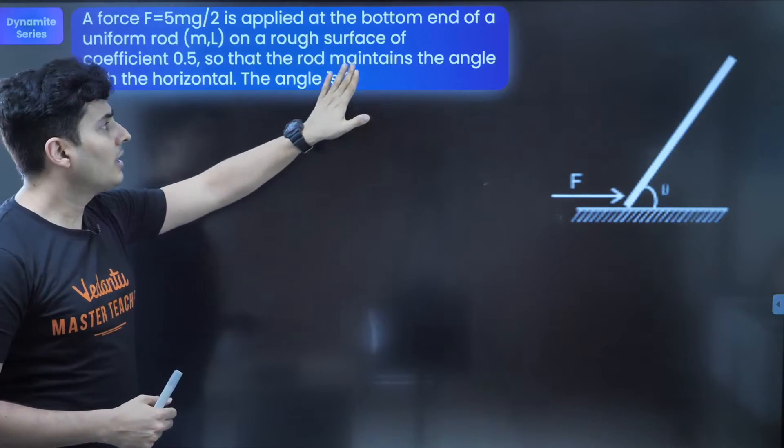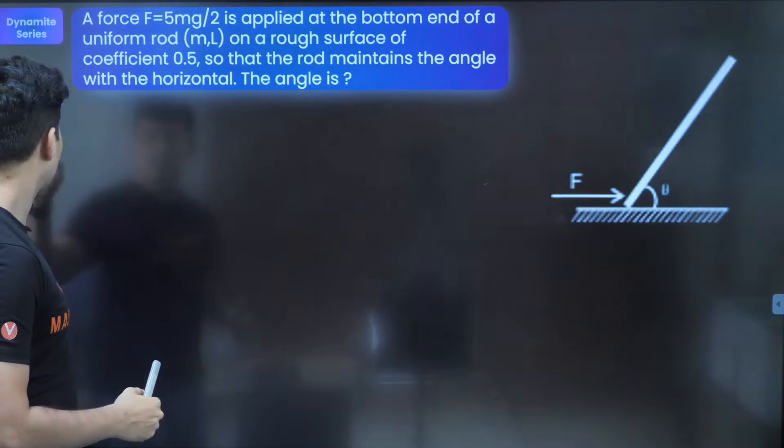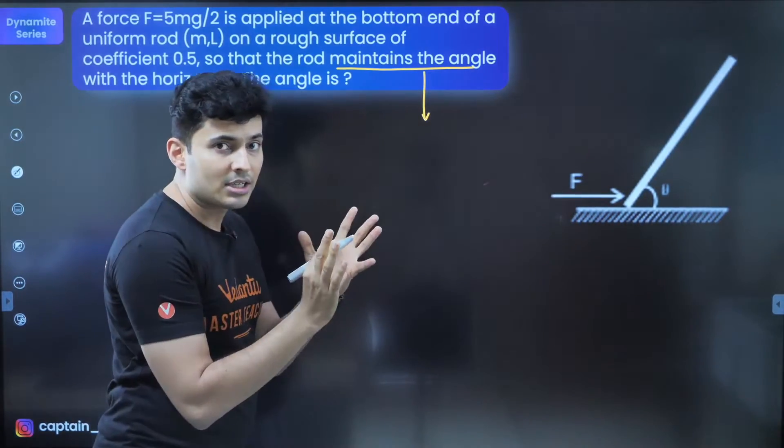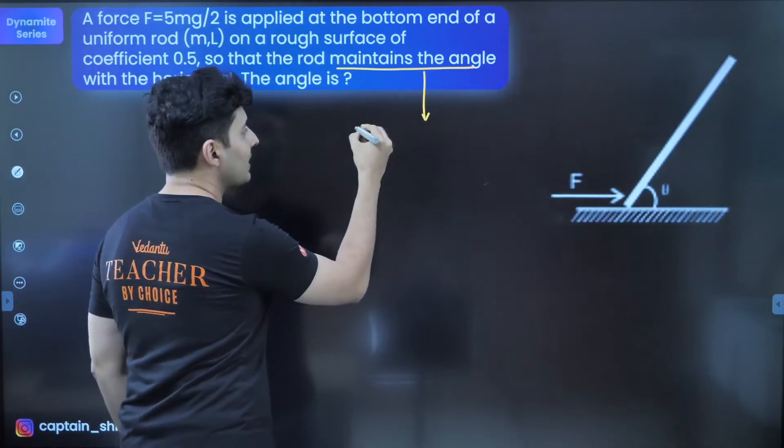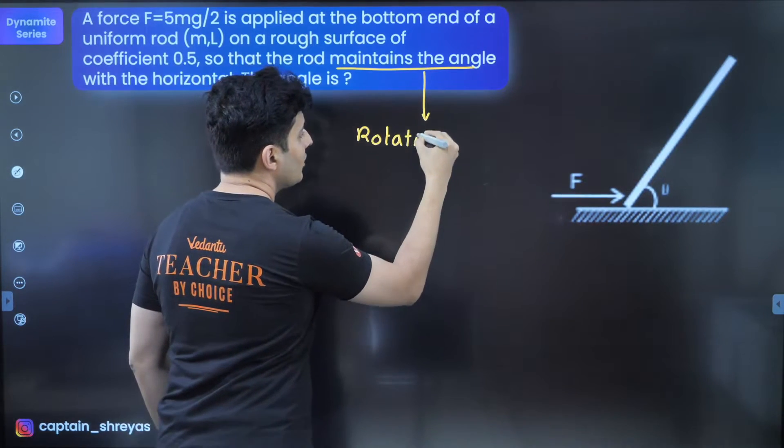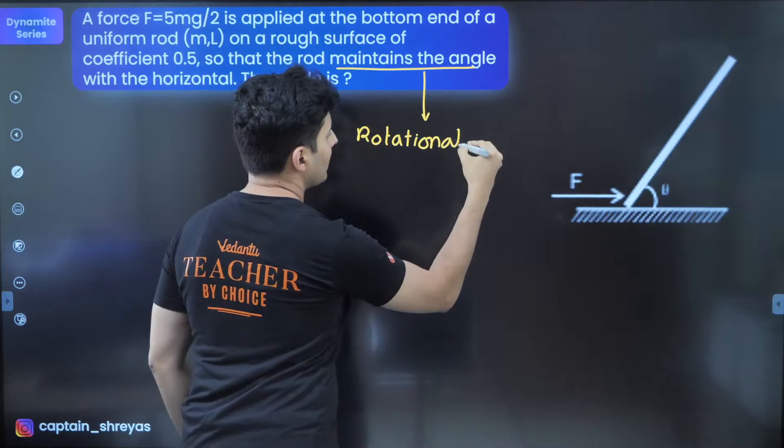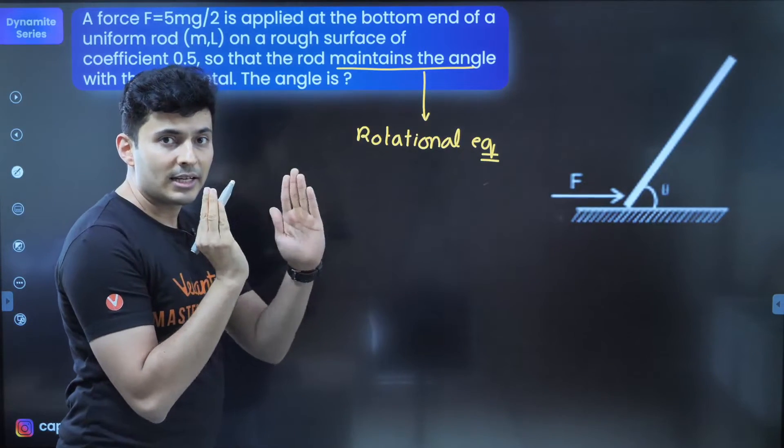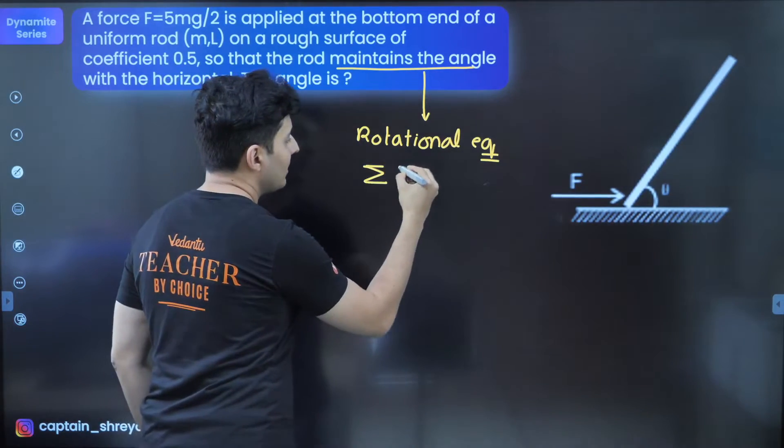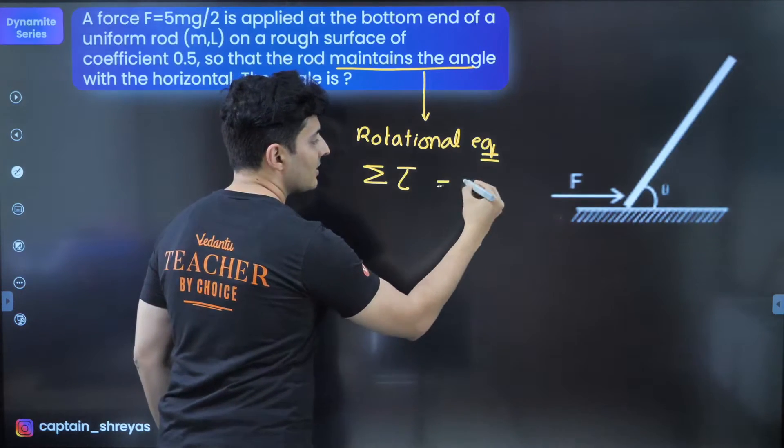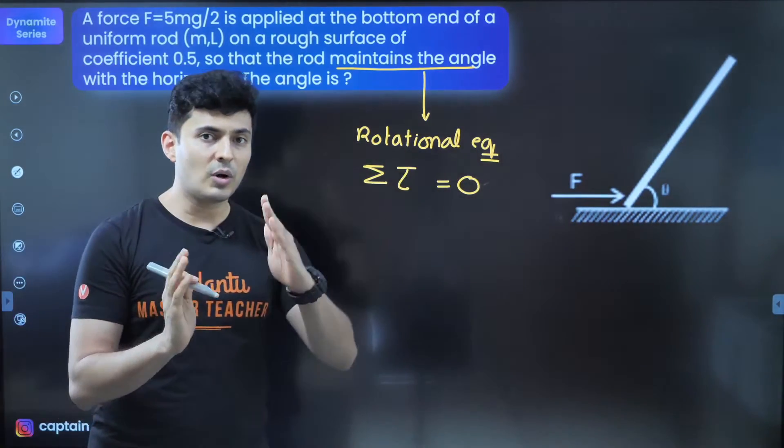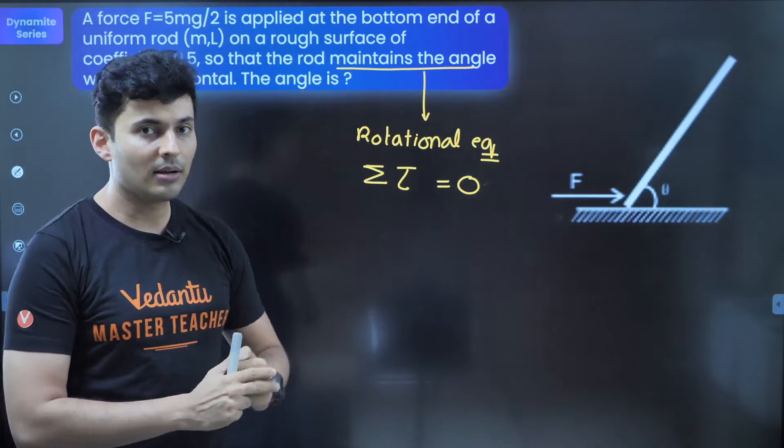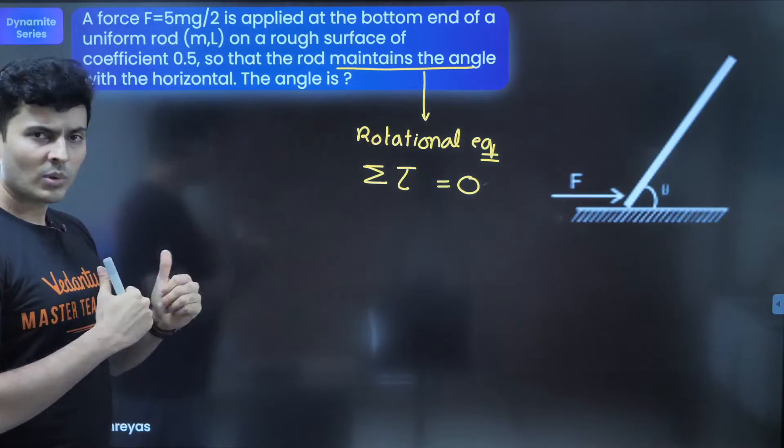Since it is clearly mentioned that the angle is maintained, the meaning of this statement is that the angle does not change. And if theta does not change, that means it is in rotational equilibrium. If there is rotational equilibrium, it also means that the net torque acting on the system is going to be 0. Only when there is torque will there be any rotational motion. If there is no net torque, then it will maintain its angle with the horizontal.